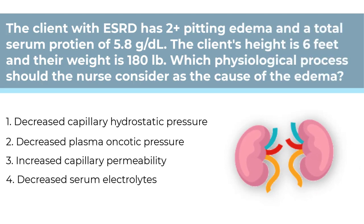The client with end-stage renal disease has 2-plus pitting edema and a total serum protein of 5.8 grams per deciliter. The client's height is 6 feet and their weight is 180 pounds. Which physiological process should the nurse consider as the cause of the edema? Number 1, Decreased capillary hydrostatic pressure. Number 2, Decreased plasma oncotic pressure. Number 3, Increased capillary permeability. Number 4, Decreased serum electrolytes.